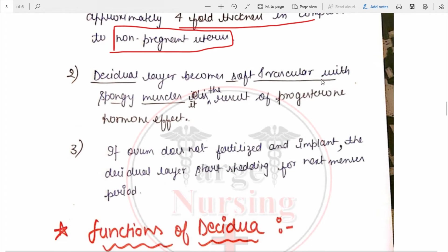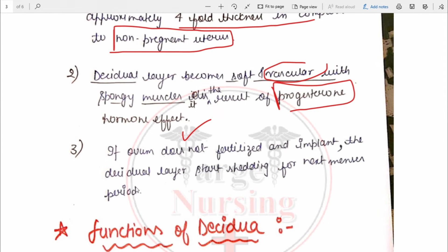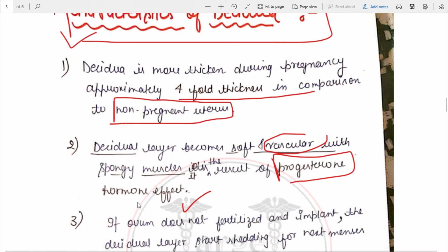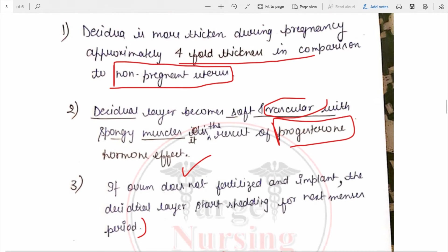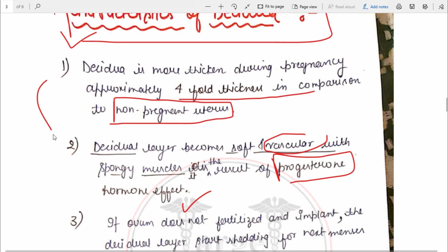The decidual layer becomes soft, vascular, and spongy. This is the result of the progesterone hormone effect. As we know, progesterone maintains the pregnancy, causing the decidual layer to become soft and spongy. If there is no fertilization and implantation, then the decidual layer will shed out as the next menstrual period. These are the characteristics of decidua.